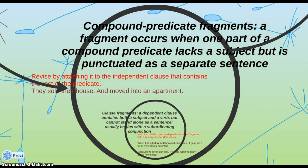Compound predicate fragments also happen pretty frequently. This happens when one part of a compound predicate lacks a subject but is punctuated as a separate sentence. For example: 'They sold the house. And moved into an apartment.' We have a compound verb — 'sold' and 'moved.' 'Sold' has the subject 'they,' but 'moved' is punctuated as its own sentence, which is a fragment. Very easy to revise: 'They sold the house, and moved into an apartment.'